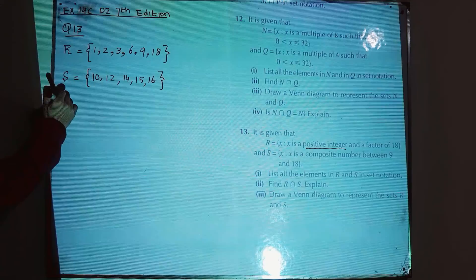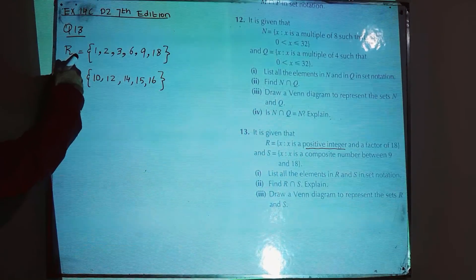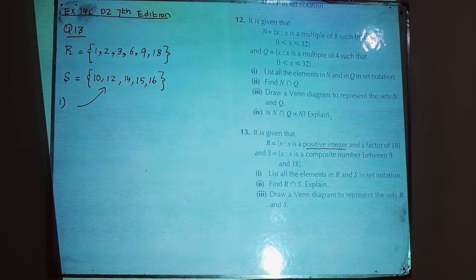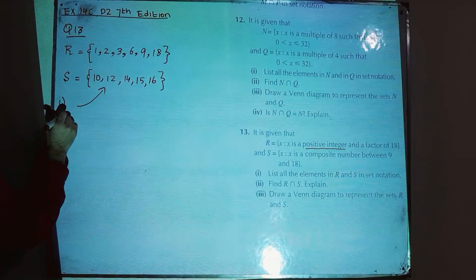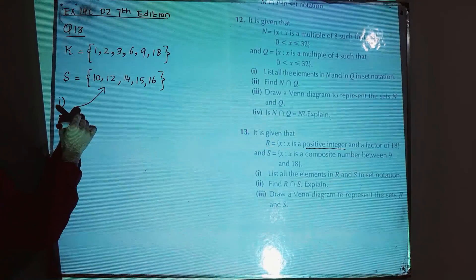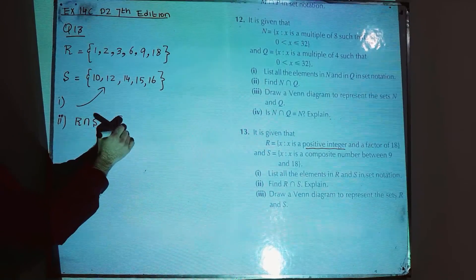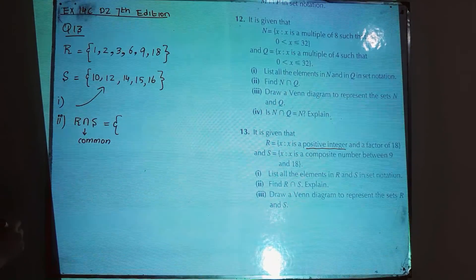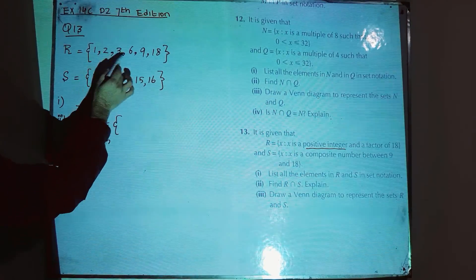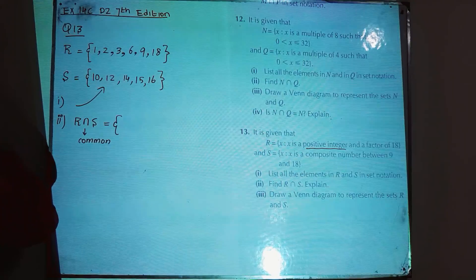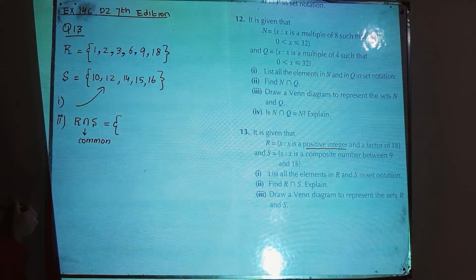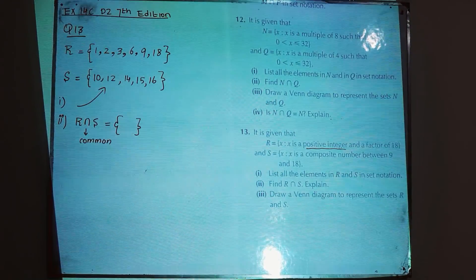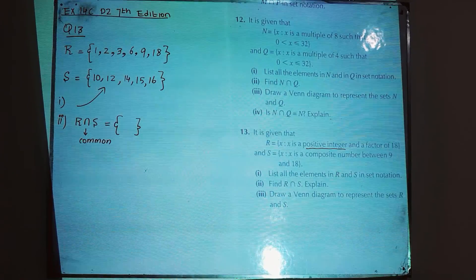Part 1 answer: R = {1, 2, 3, 6, 9, 18} — already done. Part 2: find R intersection S, meaning the elements common to both R and S. Looking at R = {1, 2, 3, 6, 9, 18} and S = {10, 12, 14, 15, 16}, there are no common elements. So R intersection S is the empty set.